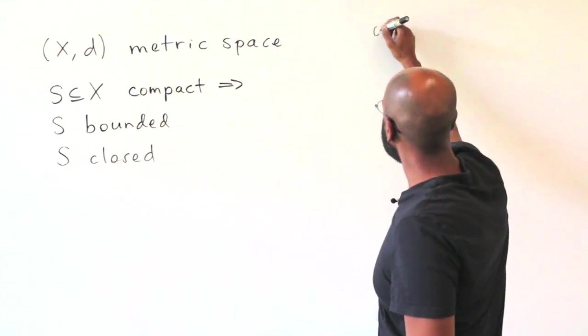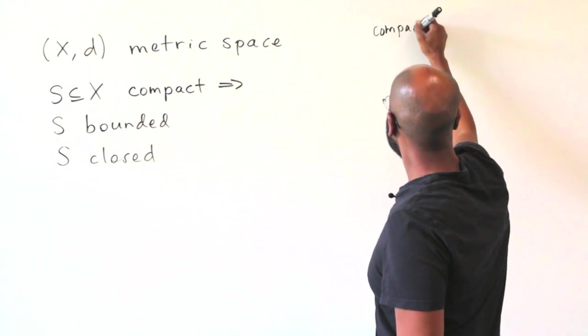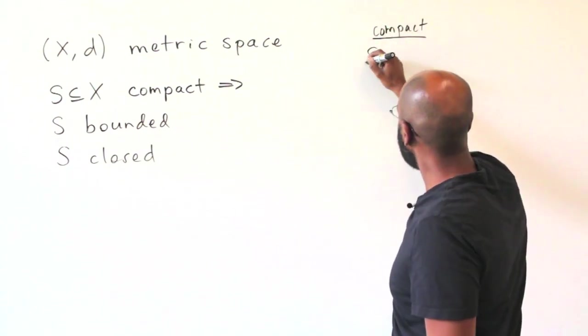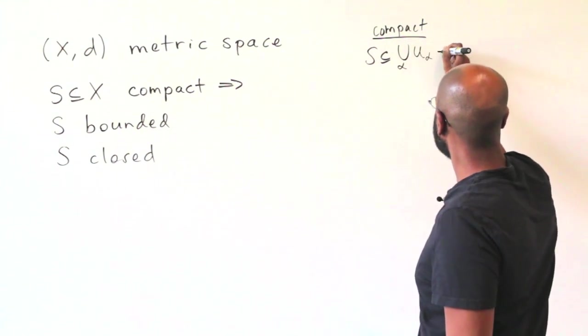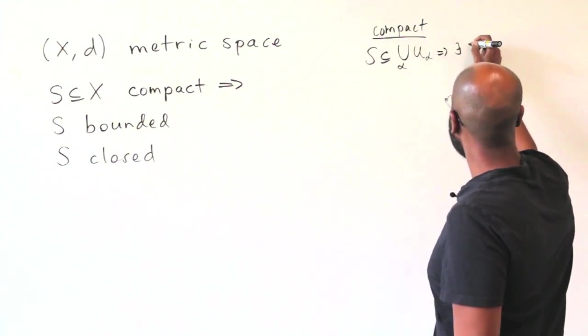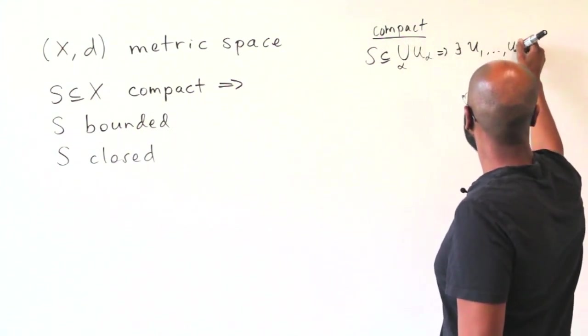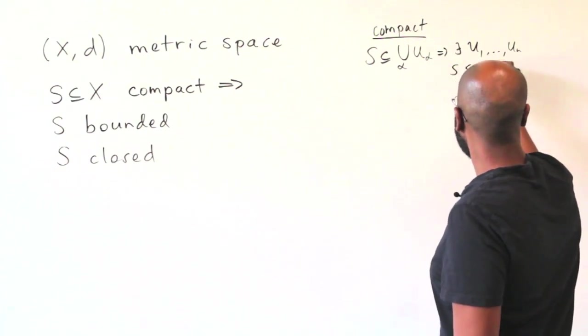So first of all, compactness, recall, means that if you have S sitting inside of the union of a bunch of open sets U-alpha, then you can find a finite collection of them that S sits inside.